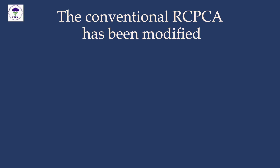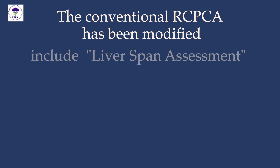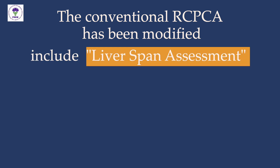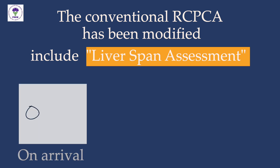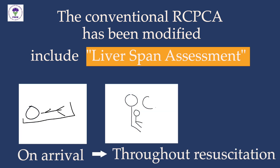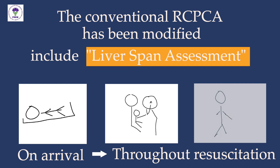Hence the conventional rapid cardiopulmonary cerebral assessment has been modified to include the evaluation of the liver span on arrival and after every intervention throughout resuscitation. On arrival, assessment of the liver span helps identify whether the child has hepatomegaly or not.